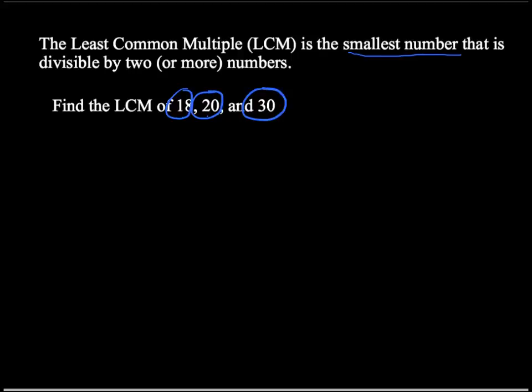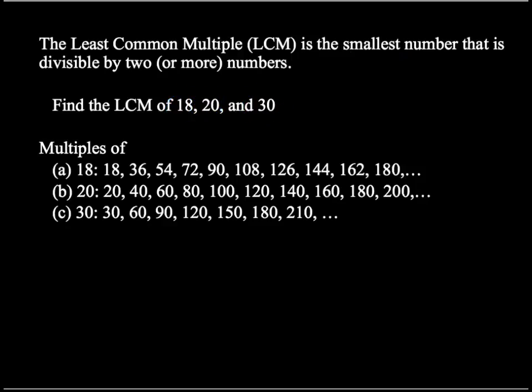Well, there's one method that we could do. We could list all the multiples of these numbers, and they go on forever. So, the multiples of 18 are 18, 36, 54, 72, 90, 108, 126, 144, 162, 180, etc.